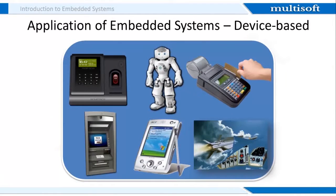Let's understand embedded systems from a device-based perspective. Almost everything around us is an embedded system or has a component of it. Some common embedded systems devices are ATC — air traffic control systems — and biometric machines that help us do an identity check. Humanoids or robotics equipment are another example, made to perform repetitive tasks. PDAs — personal digital assistants — help us maintain personal data more easily and systematically. ATMs and ATM swipe card machines have eradicated the need to always be loaded with paper money while adding convenience to our lives.